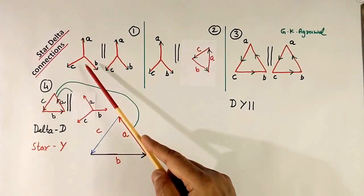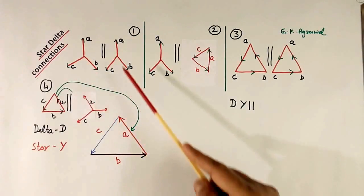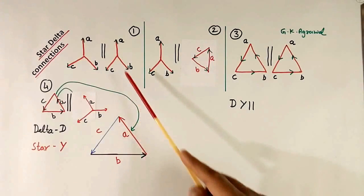Now primary can be connected in two ways: star and delta. Secondary also star and delta. Four combinations possible.